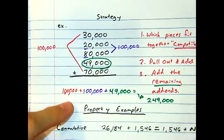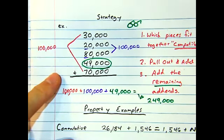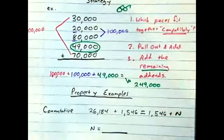So pretty easy strategy. But again, this one is all about observing and looking for those compatible pieces. Alright. Let's scroll down to examples of our properties.